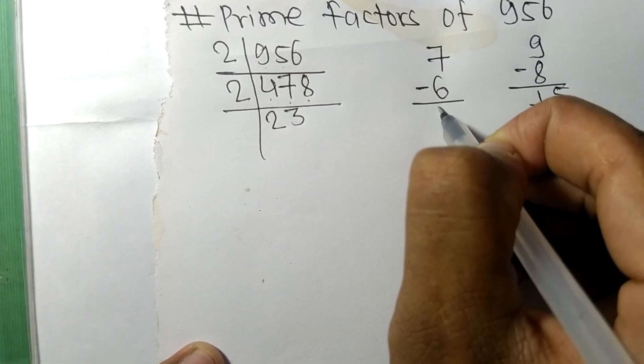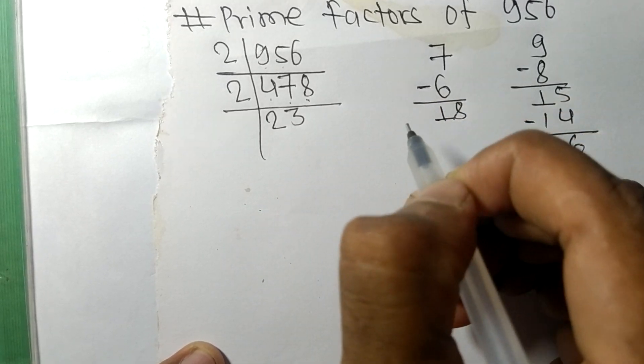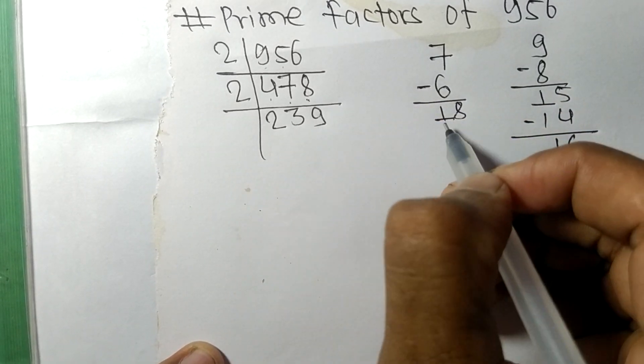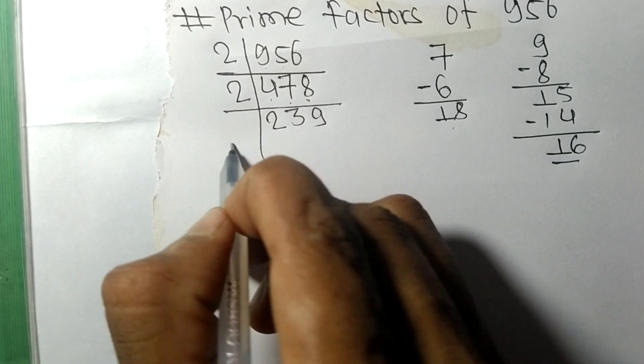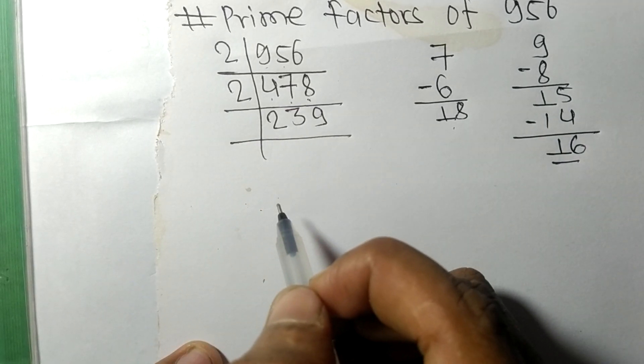This 8, 18. 2 times 9 means 18. Now we got 239 which is a prime number.